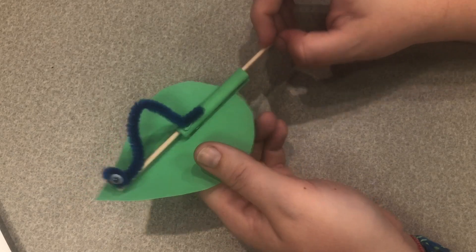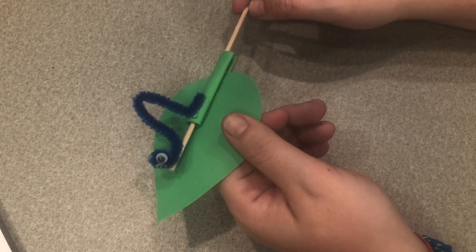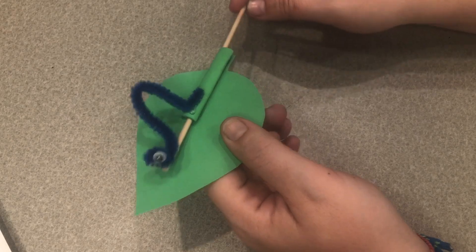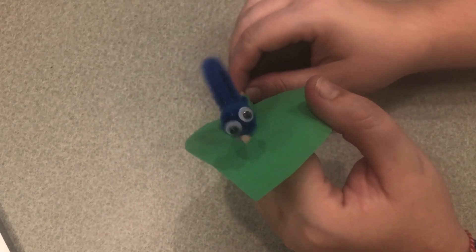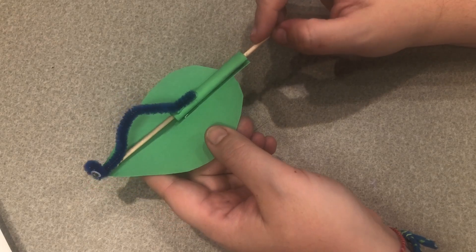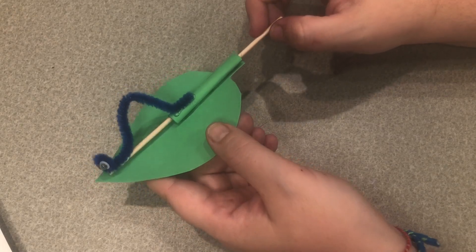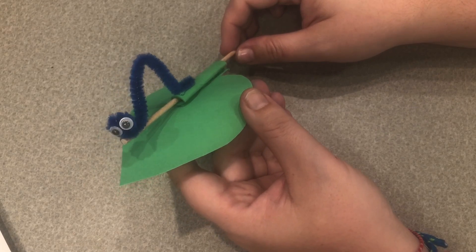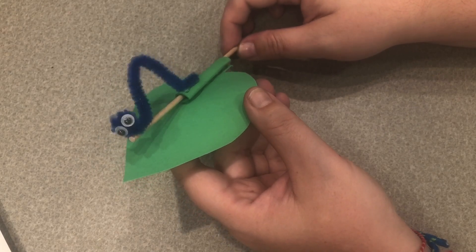And that, our little inchworm or caterpillar on the leaf that can move around with the little googly eyes, is our STEAM craft for today. Thank you so much for joining me and I will see you next week for another STEAM Explorations. Bye!